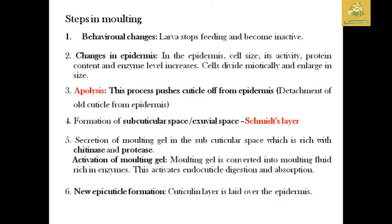The cell size changes. Enzyme and protein activities are increased, and cells are enlarged. This is the epidermis. This is apolysis — in this process, the cuticle is detached from the epidermis. There is a bond between the cells and the apolysis, which pushes the cuticles away from the epidermis, the inner layer of cells.